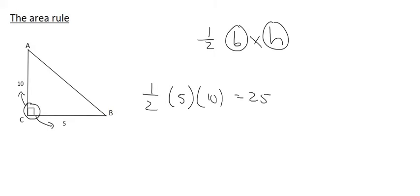But that half base times height only works when you have 90 degree triangles. And so, of course, as with the previous videos, we have to find ways to do things when we don't have 90 degree triangles, and so that's where we are going to use the area rule of trigonometry.